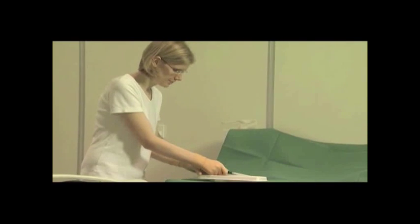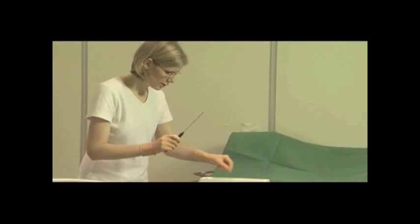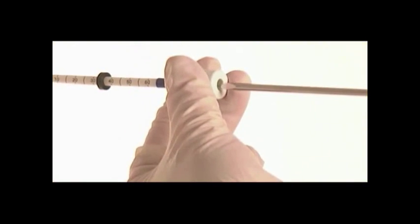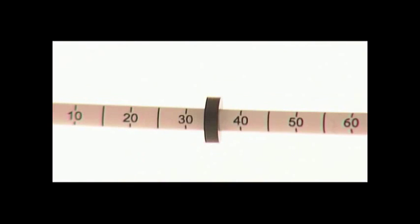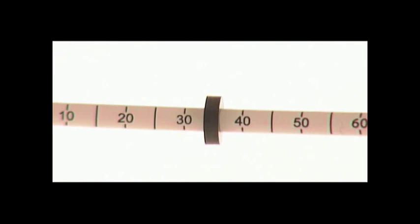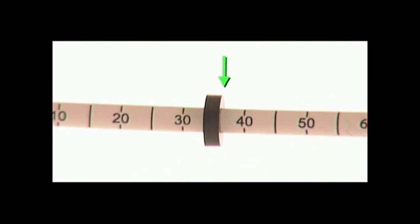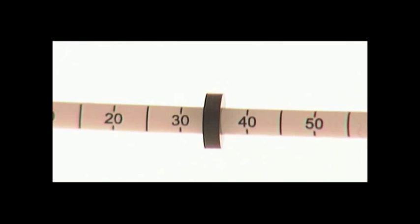Remove the remaining contents of the introducer localization set. Place the introducer stylet into the introducer sheath. Adjust the depth stop on the introducer sheath to the calculated depth of target, reading the depth from the side distal to the patient.